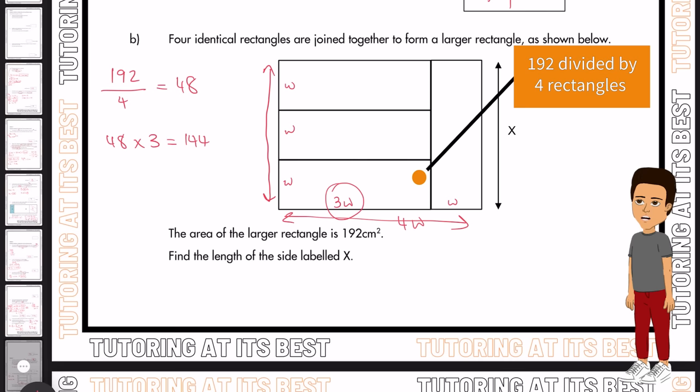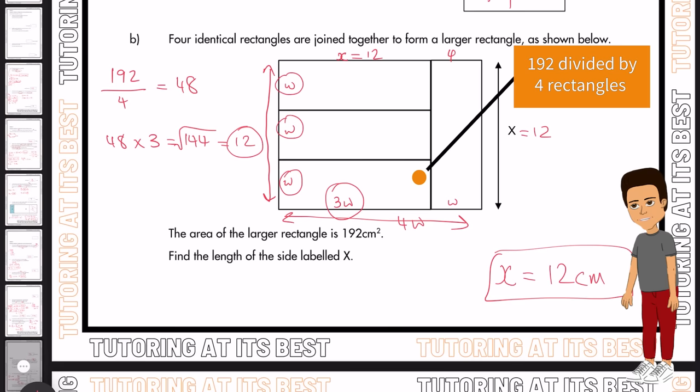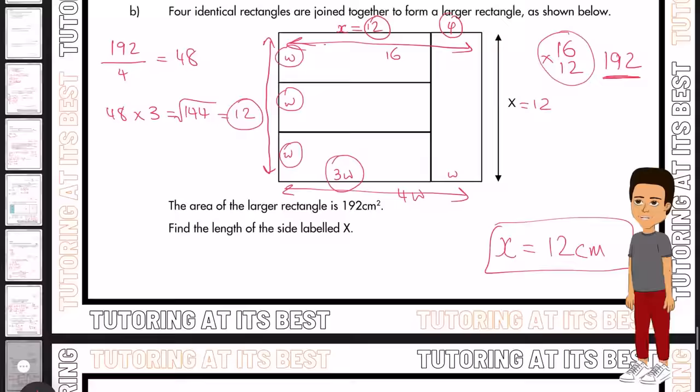So what does that tell you here? It tells us that our value of X times X will be 144. So now if we square root that answer, that gives us 12. So we now know that X equals 12 centimeters. Let's prove it now. So we'll have X, which is 12. We'll have X here, which is 12. And then because we know that three widths are the same as 12, we just have 12 divided by 3, which is 4. So in that case, we then have 12 and 4, which is 16. So this entire distance will be 16. And if we have 16 multiplied by 12, this gives us 192. And that proves the side labeled X is 12 centimeters.